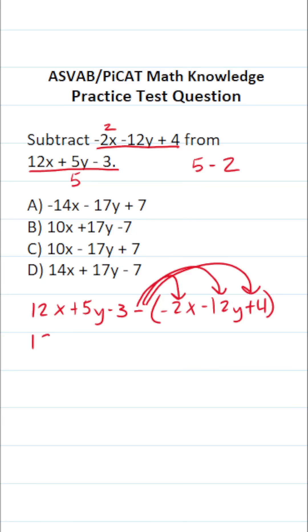So this becomes 12x plus 5y minus 3. A negative times a negative is a positive, so this becomes plus 2x. A negative times a negative 12y becomes a positive, so this is plus 12y.